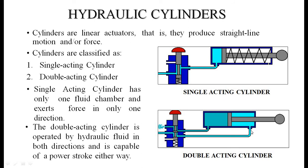In a double-acting cylinder, fluid pipes are connected on both ends of the cylinder. When fluid is supplied to one side of the piston, it moves in the positive x direction; when fluid is supplied to the other side, the piston moves in the negative x direction. A 4/2 or 4/3 direction control valve is typically used for double-acting cylinders.